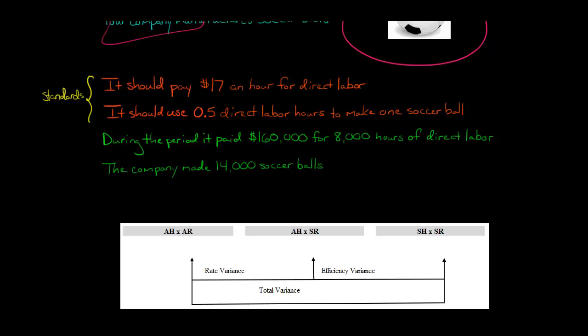So for our labor rate variance, we want to compare these two. The actual hours times the actual rate and the difference between that and the actual hours times the standard rate, that is going to be our rate variance.